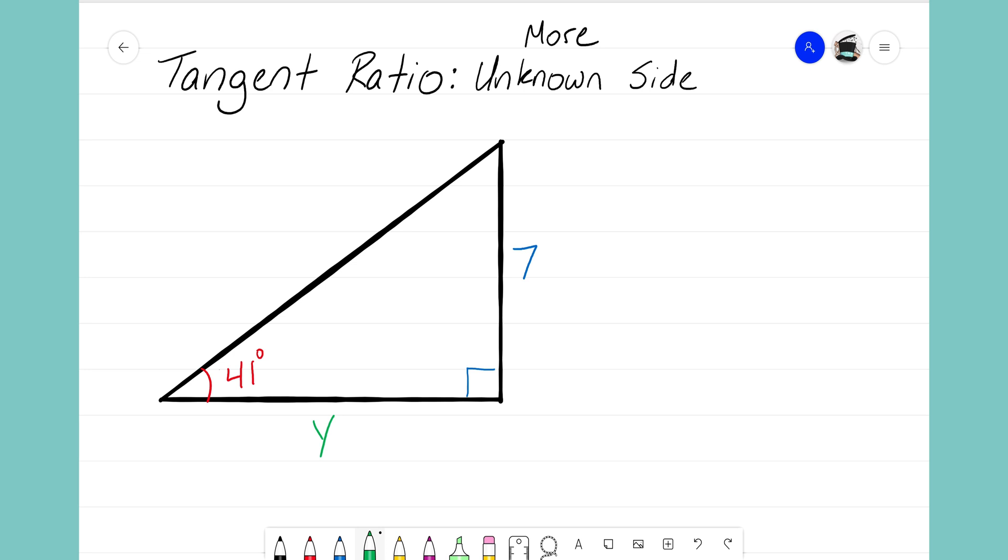Now on this triangle here I see that my slope angle is 41 degrees. I see that my opposite side here from the 41 degrees is 7, which means that 7 is my Delta Y. And that means down here on this horizontal side where the variable Y is, that Y here is my Delta X. So we want to see can we set up our tangent ratio to help us solve for this unknown side Y.